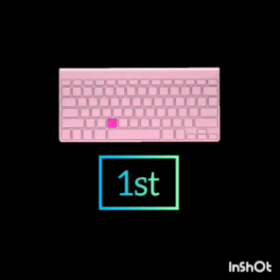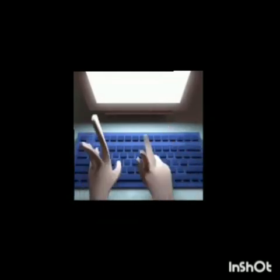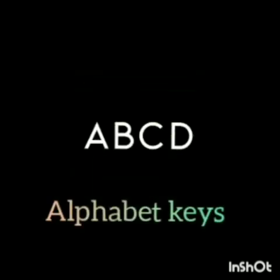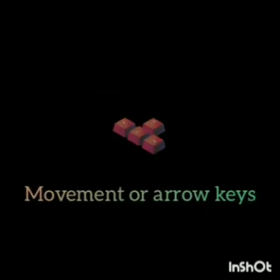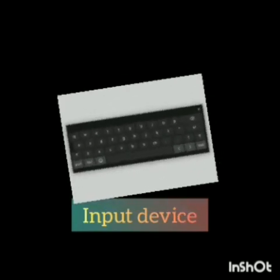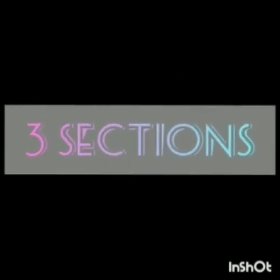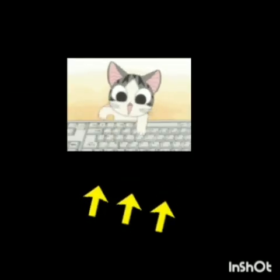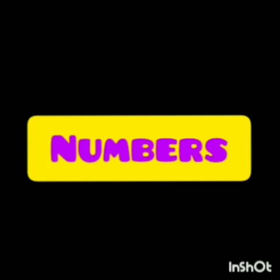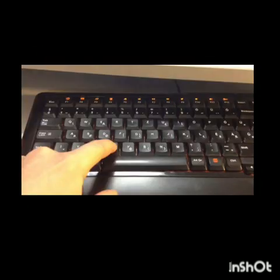The first input device is a keyboard. Keyboard looks like a typewriter. On the keyboard there are many keys, like alphabet keys, movement or arrow keys, and number keys. The keyboard has many buttons called keys. It is divided into three sections: numbers, letters, and symbols.